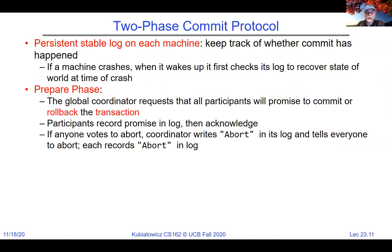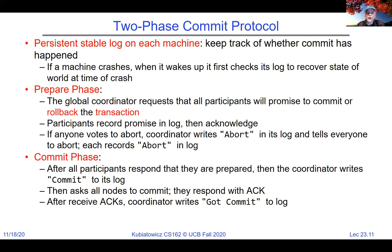In the prepare phase of two-phase commit, the global coordinator requests that all participants promise to commit or roll back the transaction. Participants record their promise in the log and acknowledge. If anybody votes to abort, the coordinator records abort in its log and tells everyone to abort. The transaction only commits if all participants say yes. In the commit phase, after all participants respond that they're prepared, the coordinator writes commit to its log, asks all nodes to commit, waits for acknowledgements, then records completion. The log is used throughout to ensure once a decision is made, it won't change.